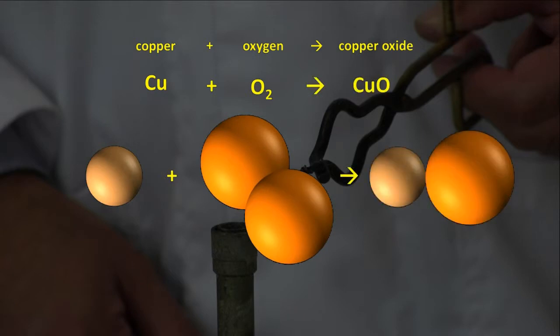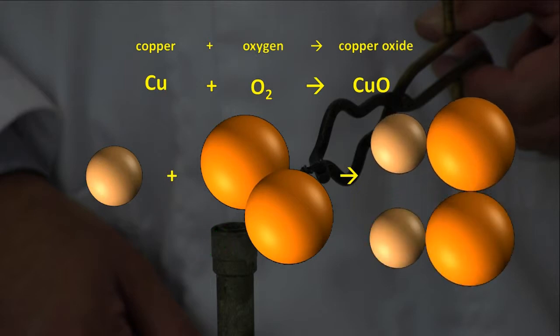Let's balance the equation. We have one Cu atom on the left and one Cu atom on the right, so our Cu's are balanced. However, since we have two O atoms on the left, we in fact form two CuO's.